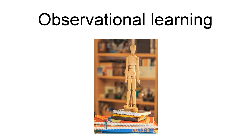Particularly in childhood, a model is someone of authority or higher status in an environment. In animals, observational learning is often based on classical conditioning, in which an instinctive behavior is elicited by observing the behavior of another — for example, mobbing in birds — but other processes may be involved as well.